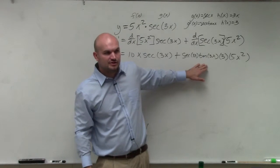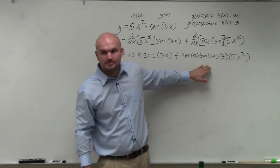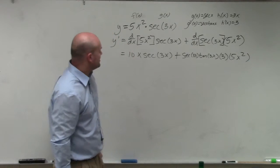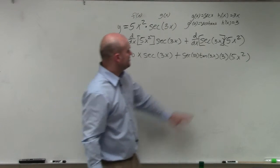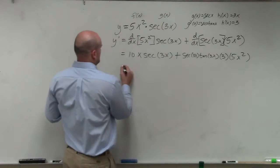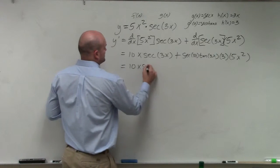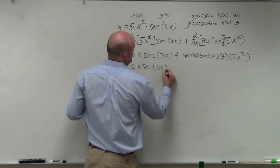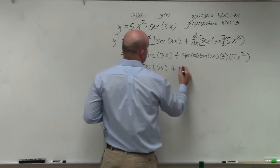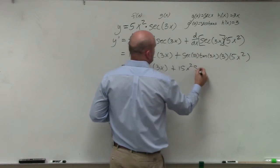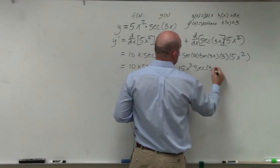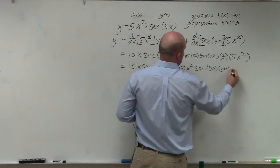Does everybody see how I had to apply the chain rule back inside from there? All right, and then we just see if there's anything else we could multiply. So I can just have 10x secant of 3x plus I can do 15x squared secant of 3x times tangent of 3x.